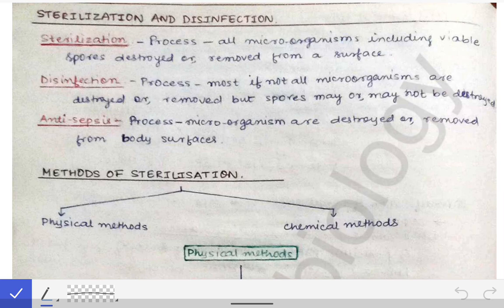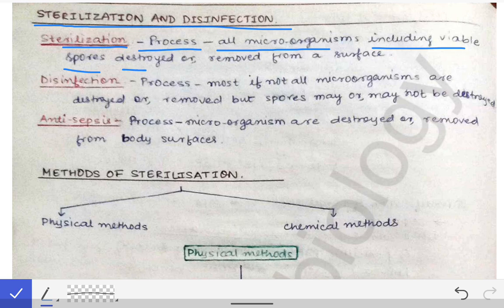We will talk about sterilization and disinfection. Sometimes short answer questions are asked about sterilization and disinfection techniques, so first we have to know the definitions of these words. Sterilization is a process by which all the microorganisms including the viable spores are destroyed or removed from a surface.